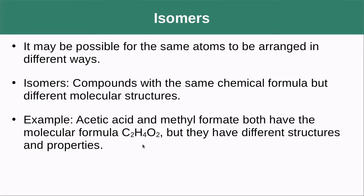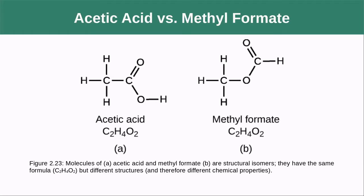Isomers: it may be possible for the same atoms to be rearranged in different ways. Isomers are compounds with the same chemical formula but different molecular structures. An example we'll use is acetic acid and methyl formate — they both have two carbons, four hydrogens, and two oxygens, but they're arranged differently.